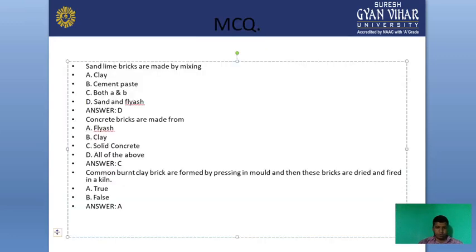Now the first MCQ question: sand-lime bricks are made by mixing — options: clay, cement paste, both, or sand and fly ash? Sand-lime bricks are made by mixing sand with lime, so the right answer is sand and fly ash. Next: concrete bricks are made from — options: fly ash, clay, solid concrete, or all of the above? A concrete brick is made from concrete, so the correct answer is solid concrete.